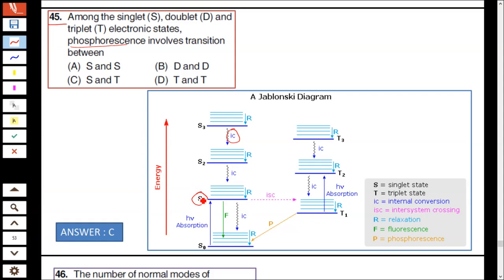It returns to the ground state. This S1 singlet higher energy state to singlet ground state is called fluorescence. Fluorescence is from S1 to S0.